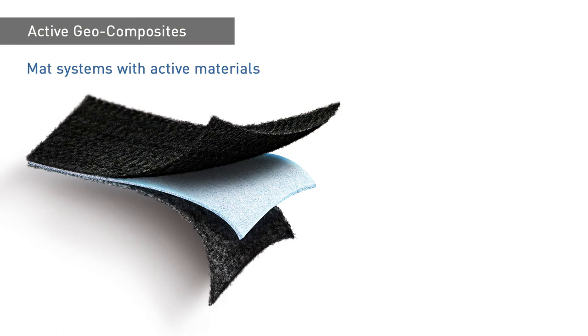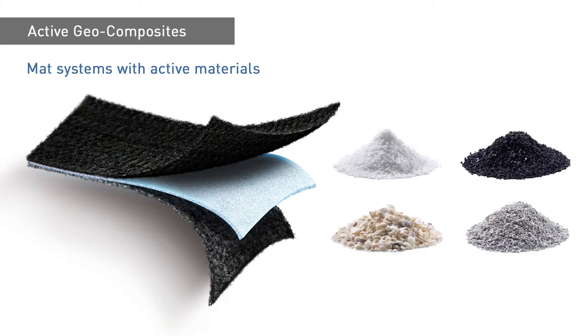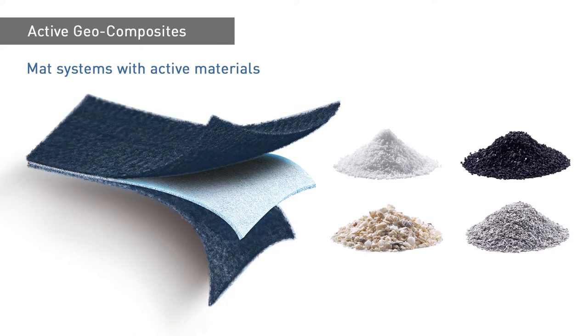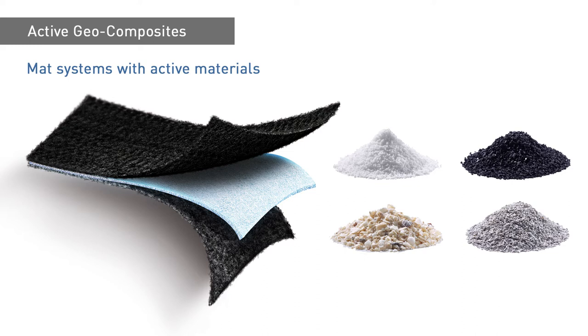Active geocomposites offer a new method for both contaminated site remediation and the prevention of pollutant migration directly at the point of entry. As their core constituent, these MAT systems incorporate active materials that are capable of binding contaminants. In their original form, these materials are not easy to integrate into construction works because they are granular and difficult to install, or because they are unable to withstand environmental conditions due to their lack of stability. By combining the binding capacity of the active substances with the robustness of geotextiles, active geocomposites are purpose-designed to remedy this disadvantage.